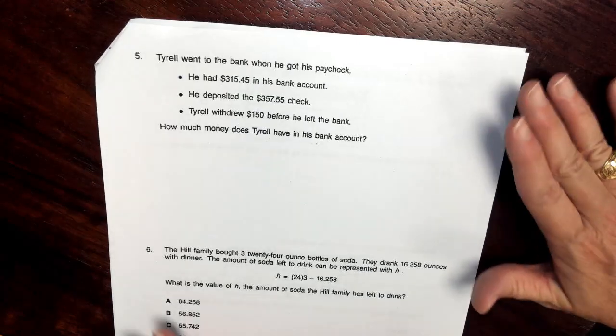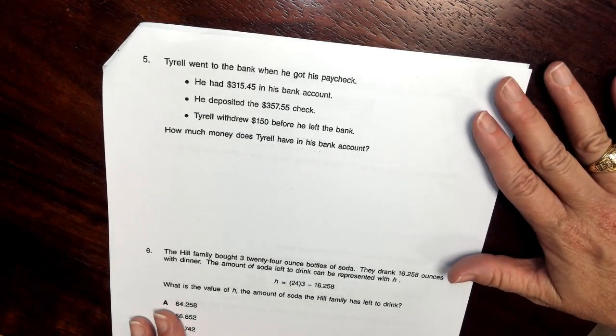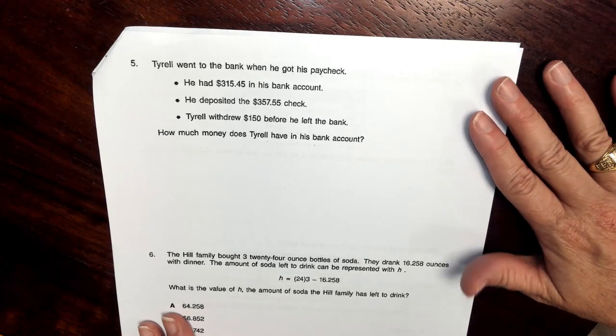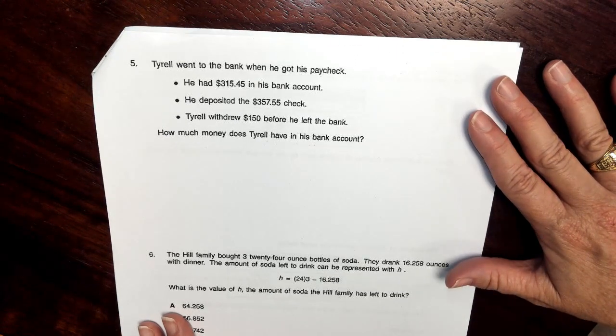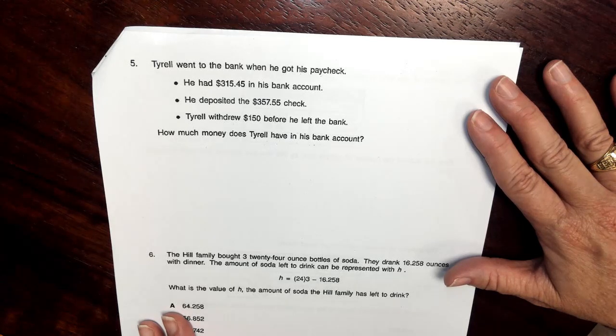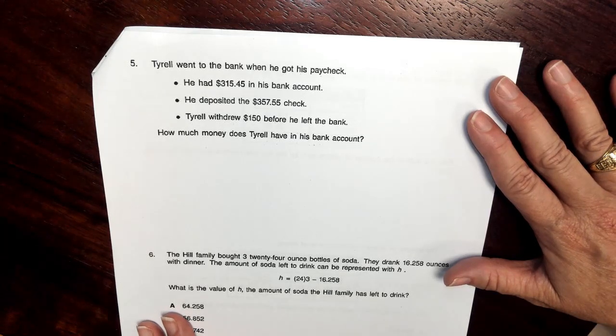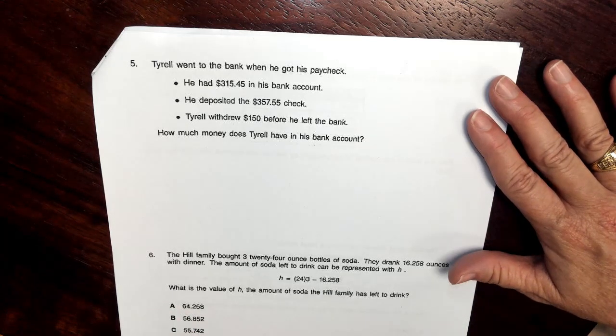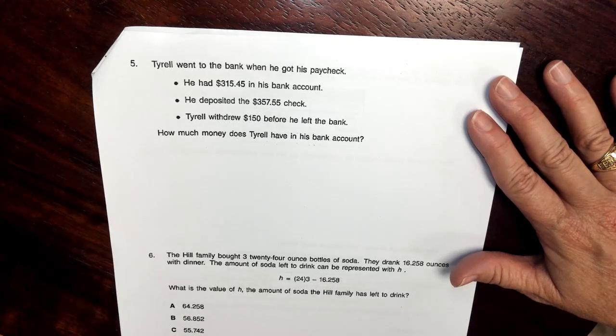Number 5. Terrell went to the bank when he got his paycheck. He had $315.45 in his bank account. He deposited his $357.55 check. Terrell withdrew $150 before he left the bank. How much money does Terrell have in his bank account?